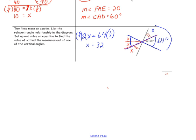The measure of the vertical pair would be 3 times 32 degrees. So over here, we have 3 times 32 degrees, which is 96 degrees — that is the measure of this angle. The other angle will also be 96 degrees because they are vertical, and vertical angles are congruent in measure.